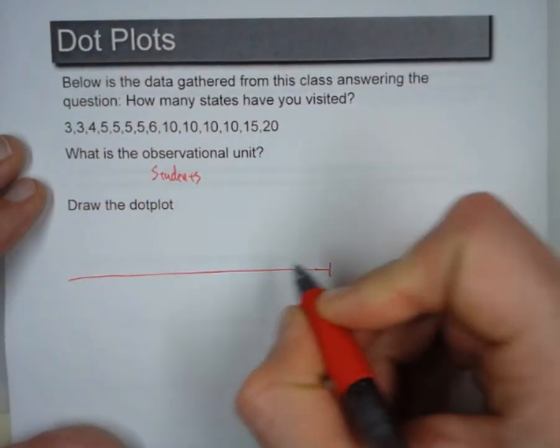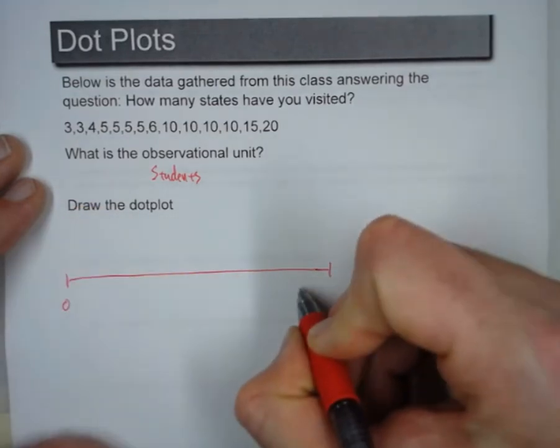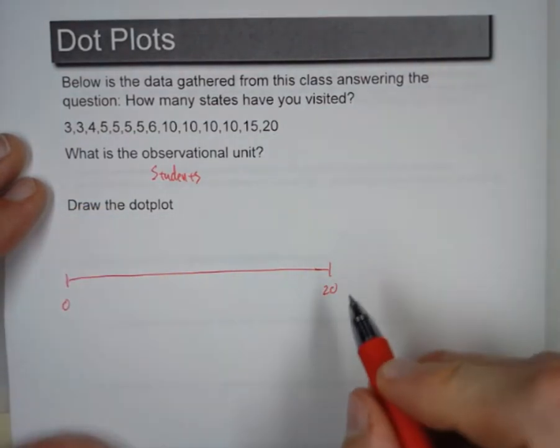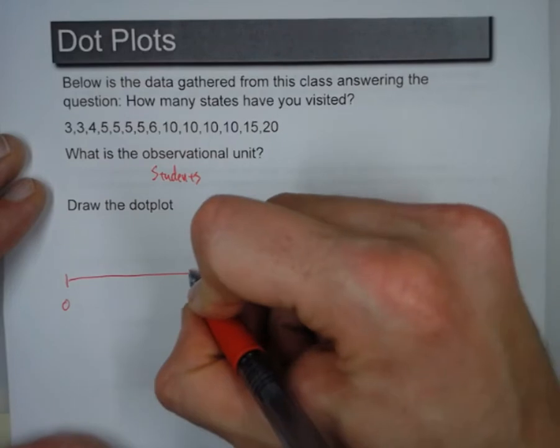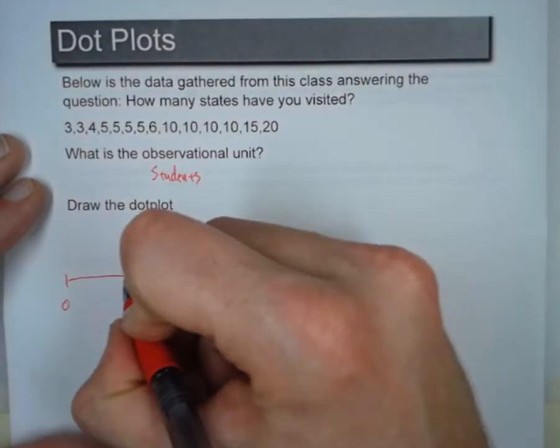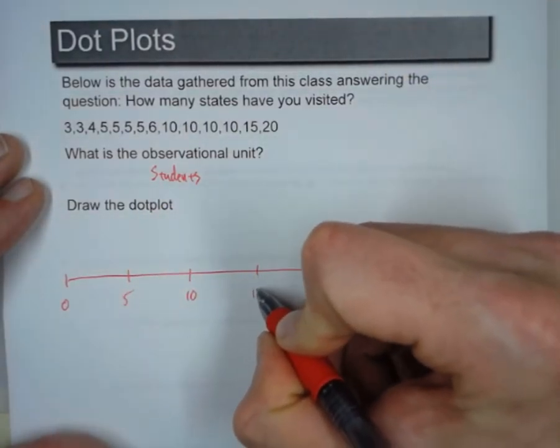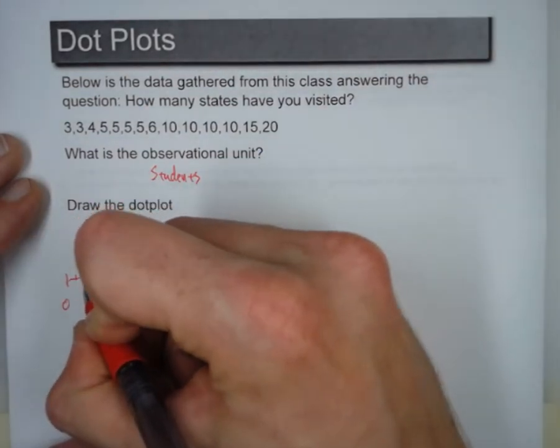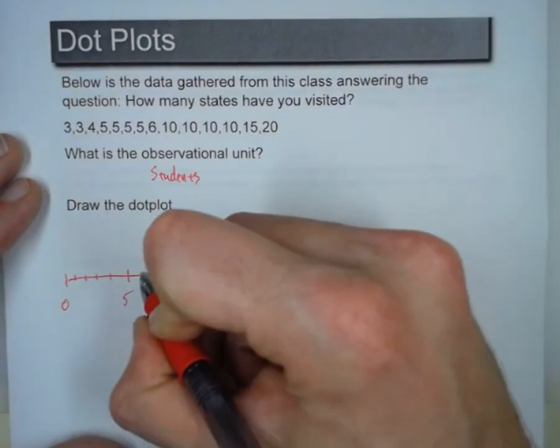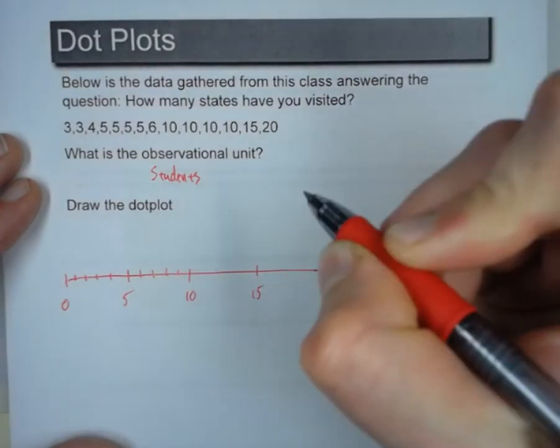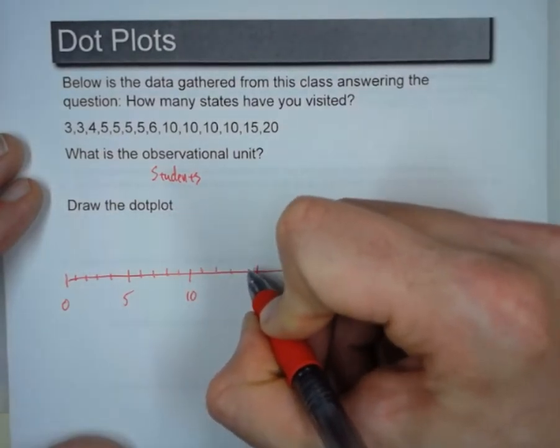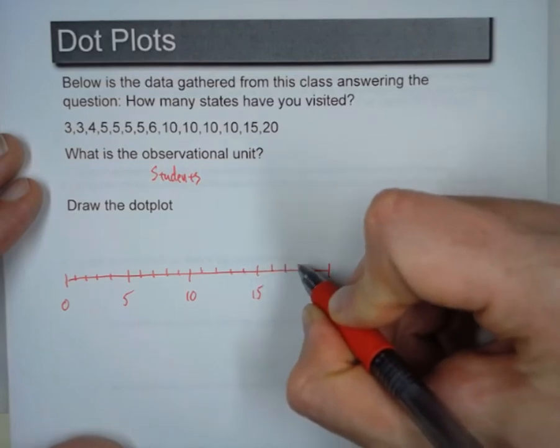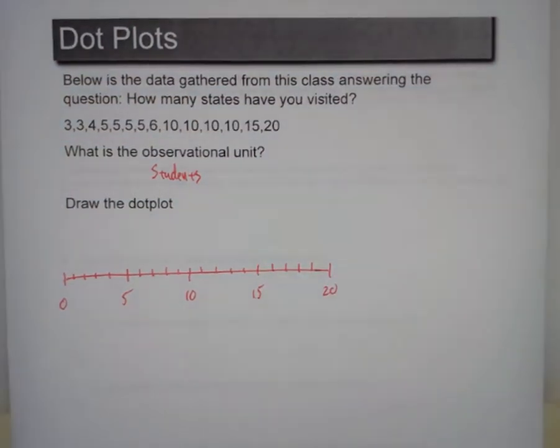Now with most graphs, when you start, you draw your scale first. So we'll go from zero to twenty. We'll cut it in half, ten. Cut it in half again, five, fifteen. I'll fill in the other numbers, but I won't label them. One, two, three, four, one, two, seven, eleven, twelve, thirteen, fourteen, sixteen, seventeen, eighteen, nineteen.